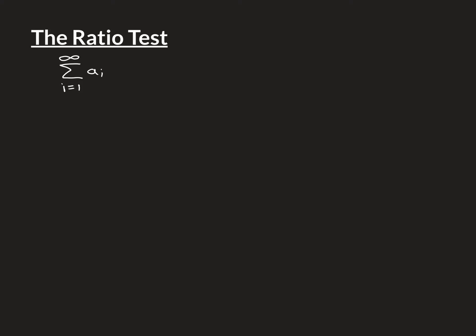The ratio test will not tell us what the actual sum adds up to. It merely tells us — or can tell us — whether it converges to something or whether it diverges. In some cases it will be inconclusive, and in some cases it won't be possible to actually compute the limit. But in the cases where you can use it, it may give you some very valuable information.